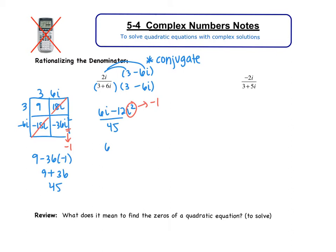So now we have 6i plus 12 all over 45. And then one last step: I got to figure out is there anything common I can divide out of all my terms. In this case, 6, 12, and 45 are all divisible by 3. So the numerator I get 2i plus 4, denominator I get 15.